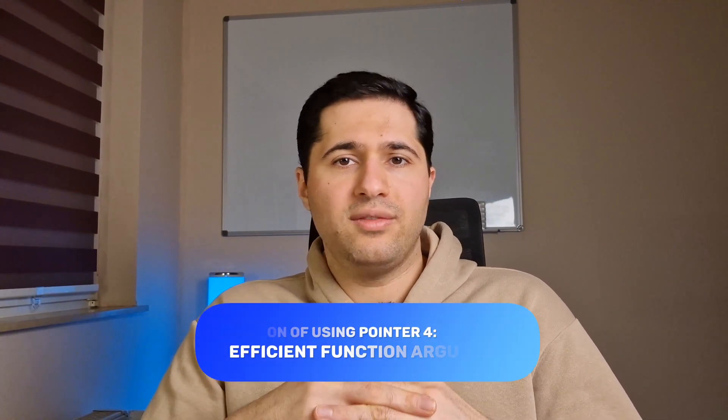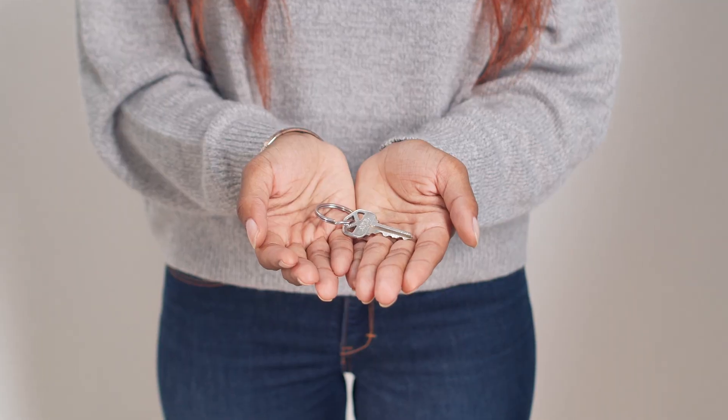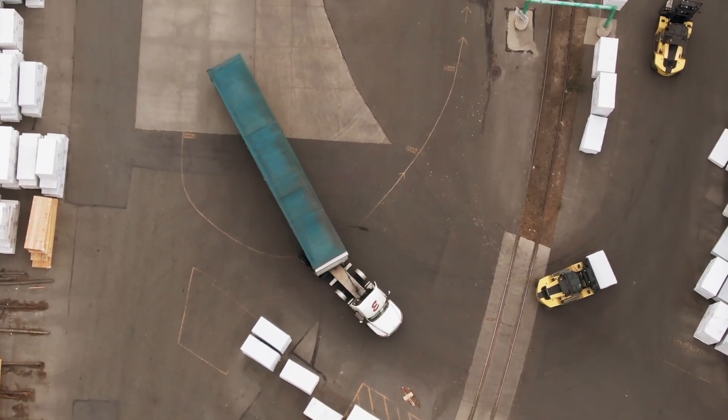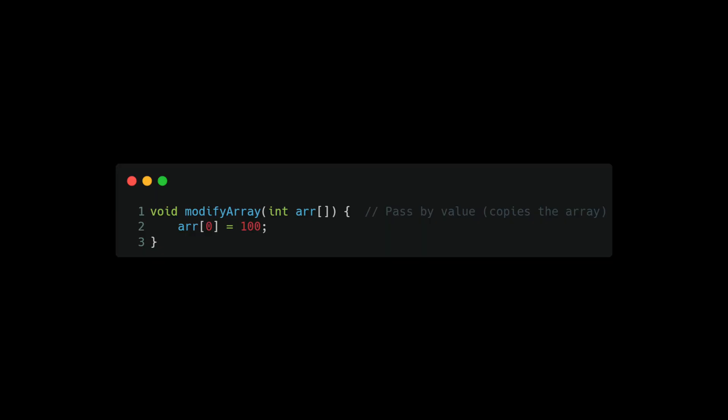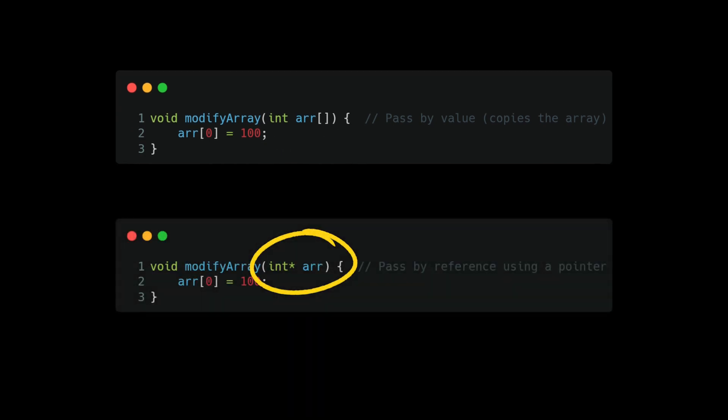The fourth advantage is that pointers allow efficient function arguments by passing references into functions. If you want to pass a large object into a function, the most efficient way is using pointers. Without them, every function call requires a full copy of the data, allocating memory each time and consuming significant resources. With pointers, instead of copying the entire array we pass only the memory address, so the function directly accesses the original array rather than a copy.